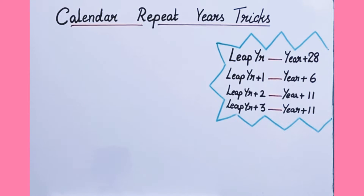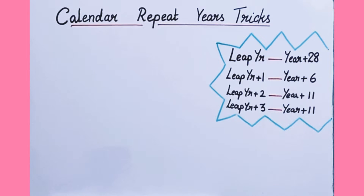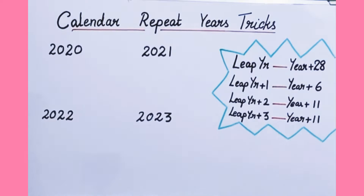Hello viewers. Do you know in how many years a calendar repeats? If the year is a leap year, it repeats after 28 years. And if it is leap year plus 1, it repeats in 6 years. If it is leap year plus 2 or plus 3, then it repeats in 11 years. So let's see more about this.